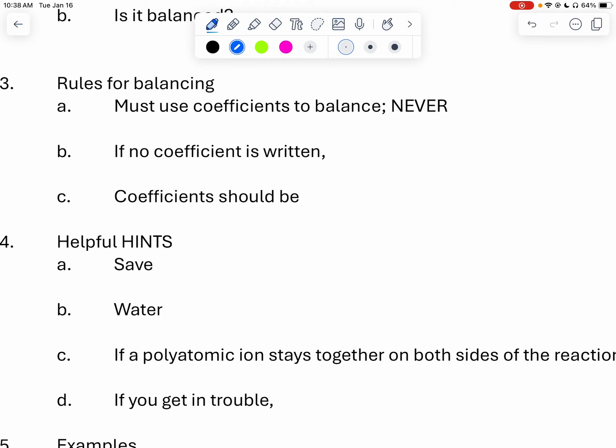So we must use, so our rules for balancing, we're going to start off here. The most important one is we're going to always use coefficients to balance. We've got to use coefficients to balance. We will never, ever, ever, ever change our subscripts. Remember subscripts are those little numbers that are beside the number, beside the substance. We're not talking about little numbers that we're changing. We're only going to put numbers out front. Only numbers out front.